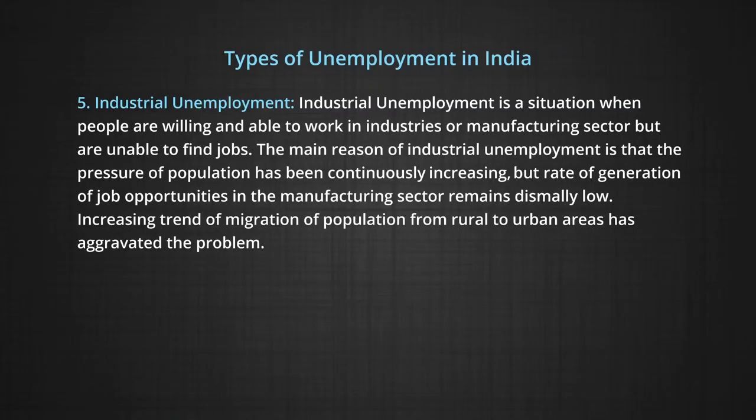Next is industrial unemployment — a situation when people are willing and able to work in industries or the manufacturing sector but are unable to find jobs. The main reason is that population pressure has been consistently increasing, but the rate of job generation is dismally low. Increasing migration from rural to urban areas has aggravated the problem. Industrial unemployment is also a spillover of rural unemployment and poor labour absorption by the manufacturing sector. A major cause of poor absorption is the massive use of labour-saving devices — that is, mechanization, automation, and so on.